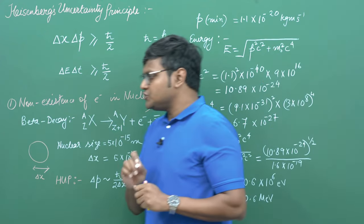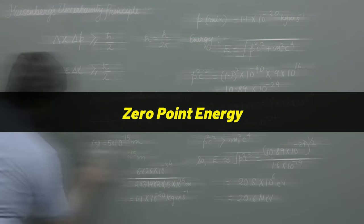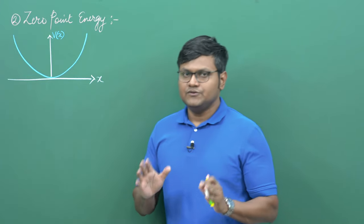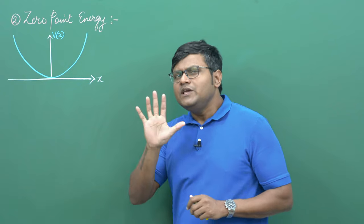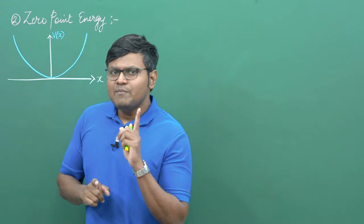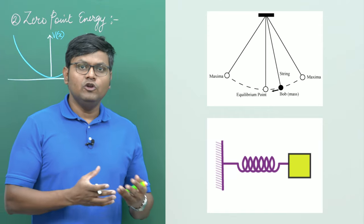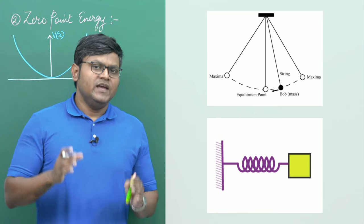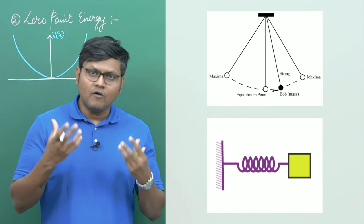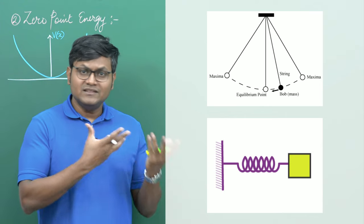The second consequence of the uncertainty relation is called zero-point energy. It is very peculiar that systems can never really go to absolute zero energy. In classical physics, a simple pendulum at rest or a spring-mass system in equilibrium technically both have zero energy — there is no restriction that a system cannot have zero energy. But the same consequence does not apply to microscopic systems like atoms and molecules, and even vacuum does not have zero energy.